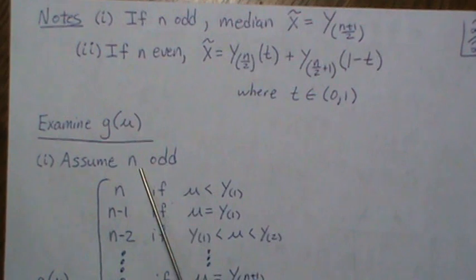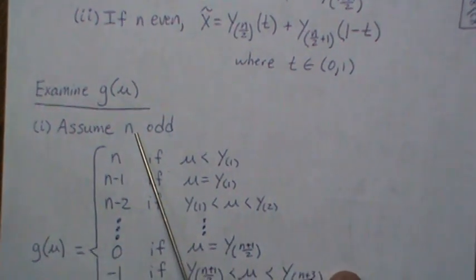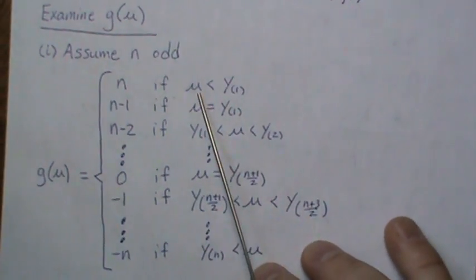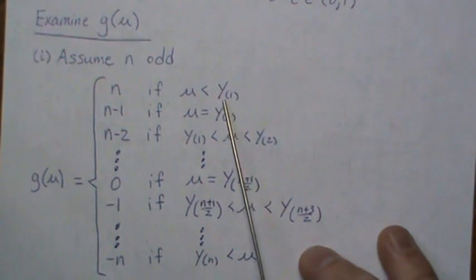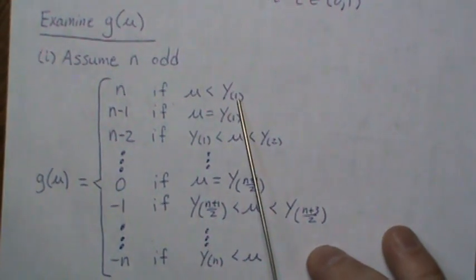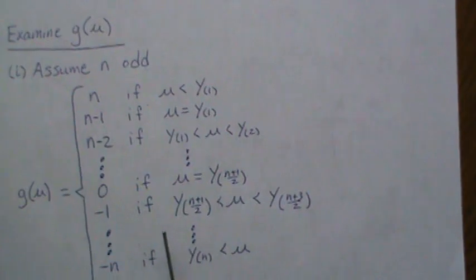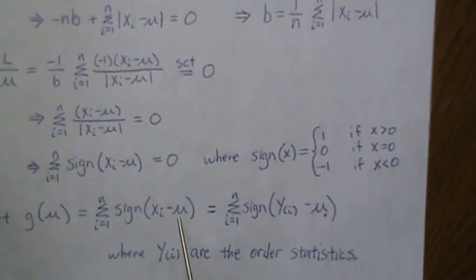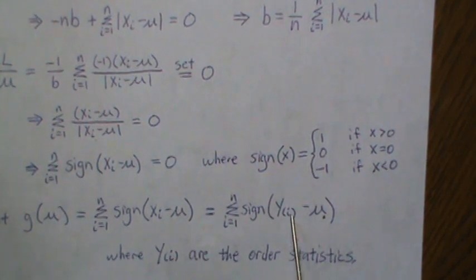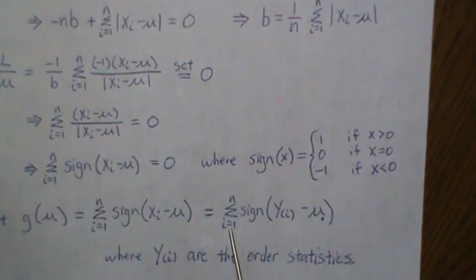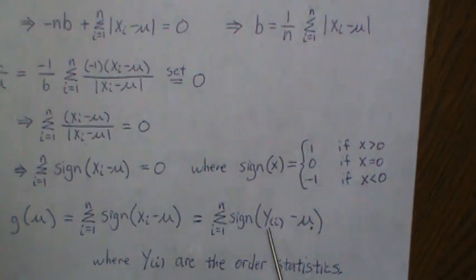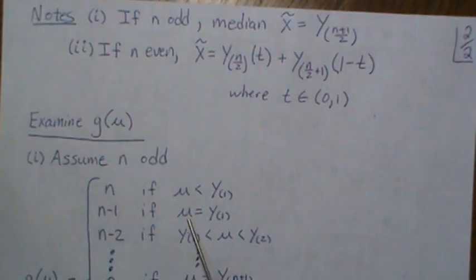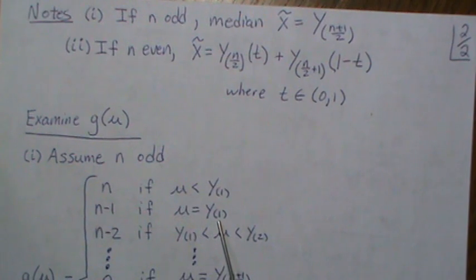But let's assume n is odd. And then g of mu is equal to this. And let's explain it. So if mu is less than every data point, then, so if mu is less than every data point, this is always positive for each n. So we're going to add up n ones, and we're going to get n.